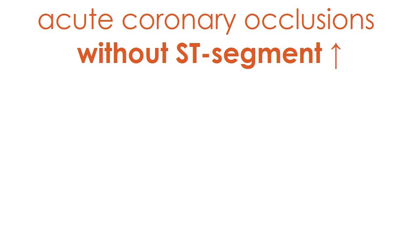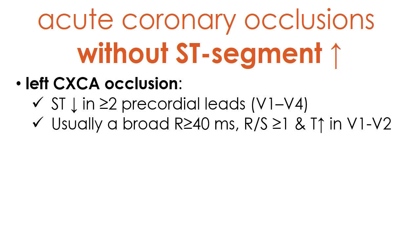The most common one is the occlusion of a left circumflex coronary artery leading to ST-segment depression in two or more precordial leads from V1 to V4. These changes are frequently accompanied by the presence of a broad R-wave of 40 milliseconds or more in duration in leads V1 or V2, with an R-to-S ratio equal to or more than one, and positive T-waves.